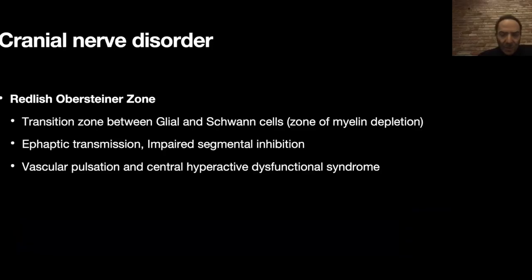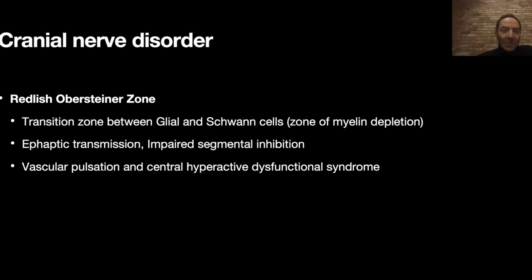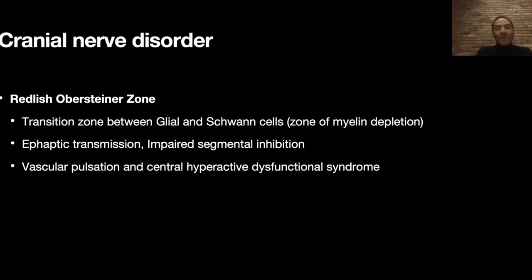When you want to understand why trigeminal neuralgia happens, it's really a problem of the Redlich-Obersteiner zone. The Redlich-Obersteiner zone is the root entry zone and is where the transition between the glial and Schwann cells happens. It's a zone that has myelin depletion, and because of that it's weak. The weakness of that zone will cause irritability of the nerve.